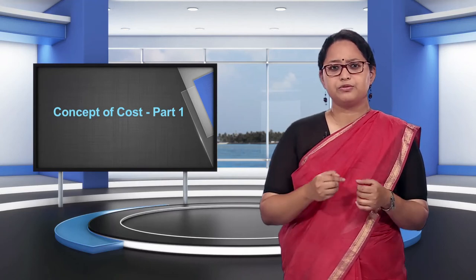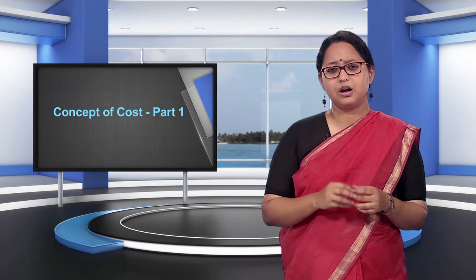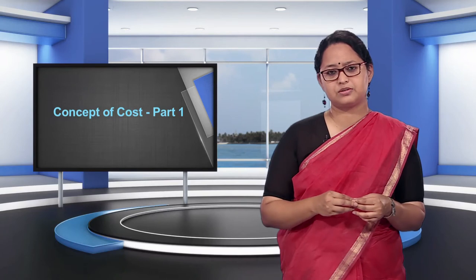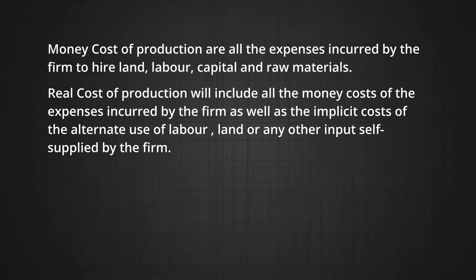Whatever the decision of the farmer, she will have to take both the explicit cost of hiring workers and raw materials, as well as the implicit cost of losing out on the farm income or rental income from the grocery shop. Another way to think about these costs is in terms of money and real costs. Money cost of production includes all the expenses incurred by the firm to hire land, labor, capital and raw materials. Real cost includes all the money costs as well as the implicit costs of alternate uses of self-supplied inputs.